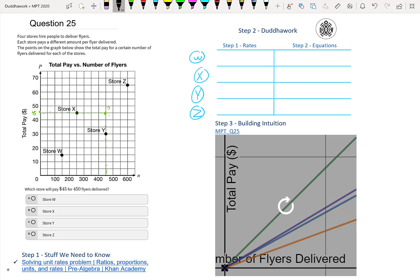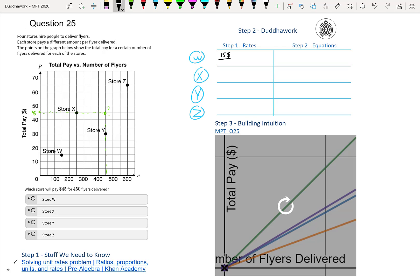So you can click the link in the description below or in the card above. So if we do the rates, store W, if you deliver 150, you get paid $15. So you get paid $15 for 150 flyers. So if we do this division, we divide each by 15. So that's 1 and then that's 10. So essentially you get paid $0.1 per flyer. So that would be $0.10 per flyer, essentially. That's your rate.